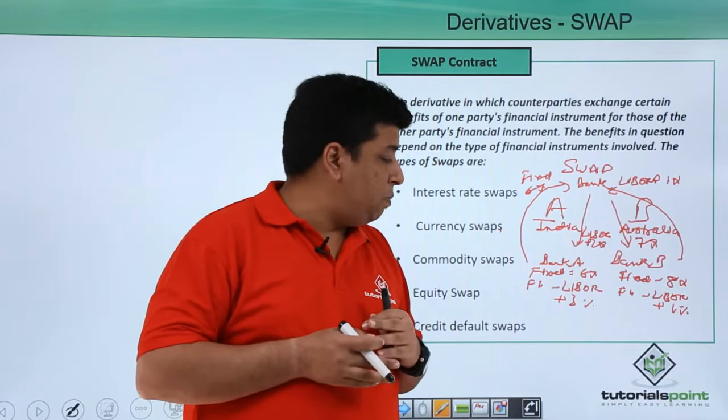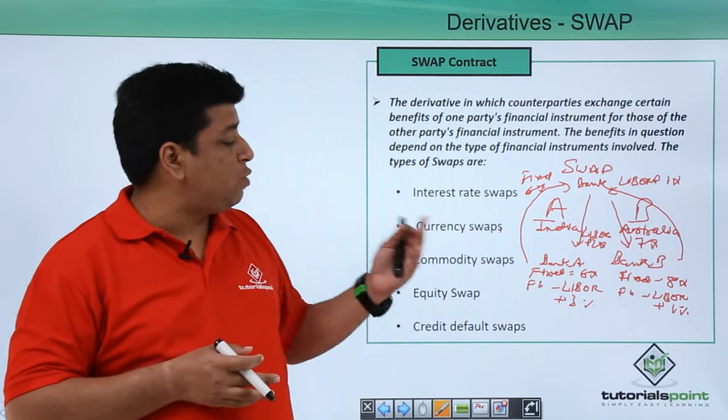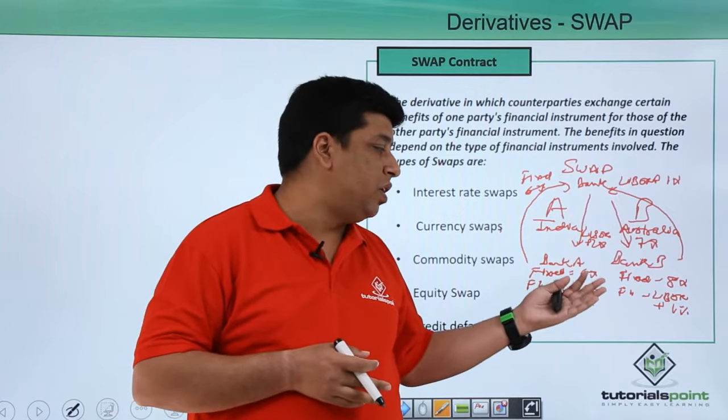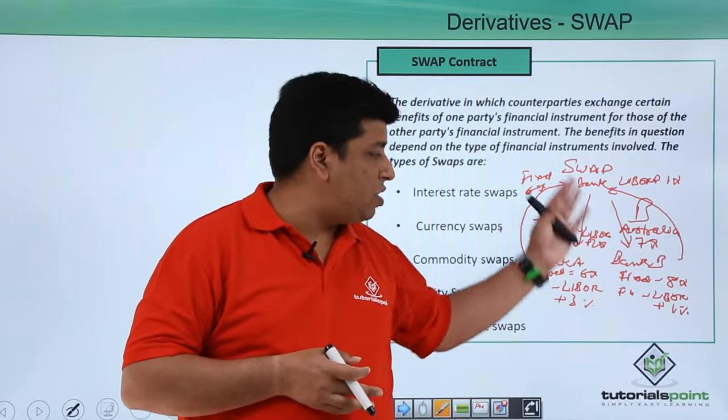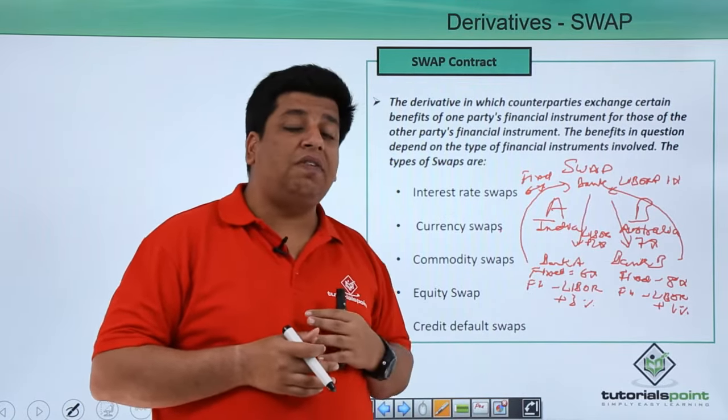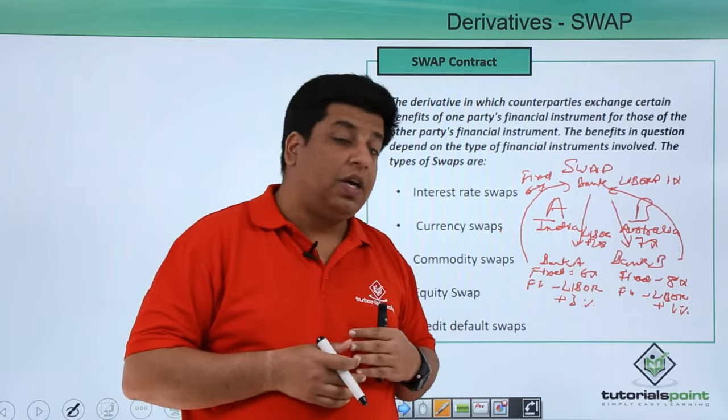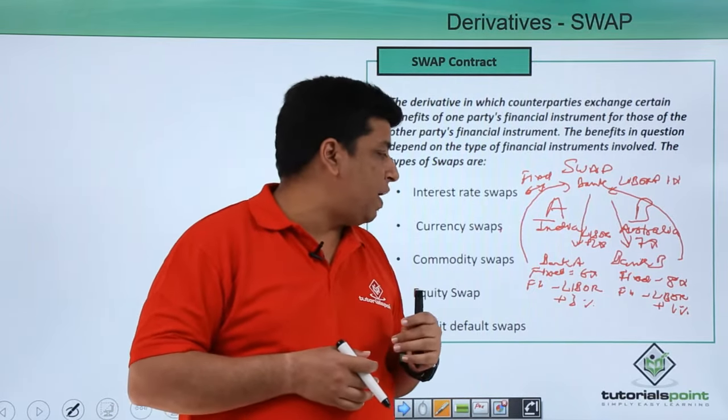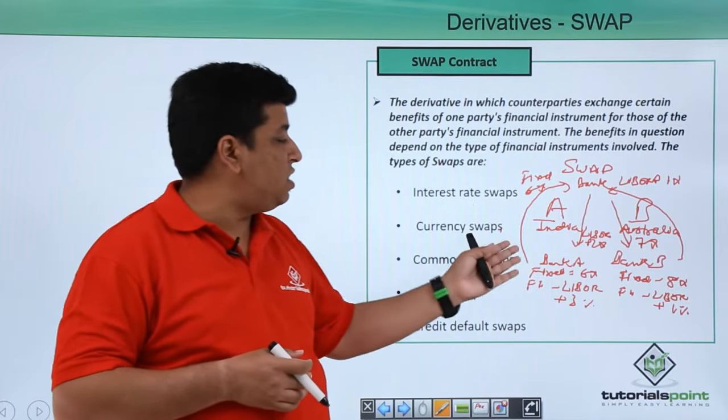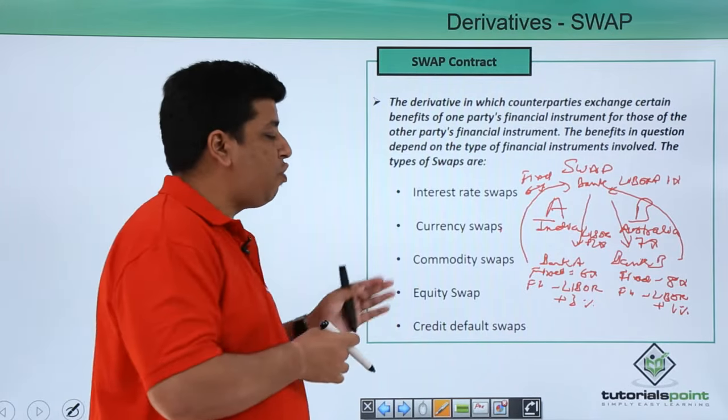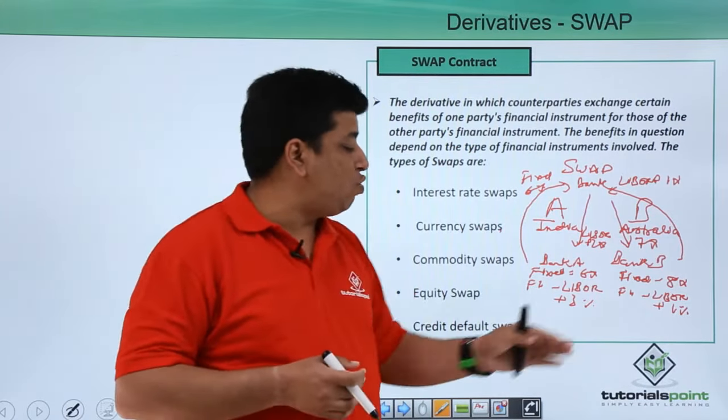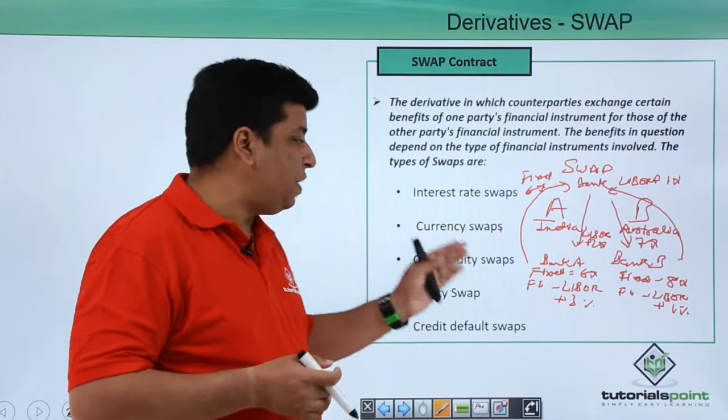Similarly company B is also profitable since it wanted loan at fixed rate. Since the fixed rate was 8%, now the swap bank is giving it a loan at 7%, and in the meantime swap bank is also making a profit because it is taking loan at 6% from company A and giving it to company B at 7%.